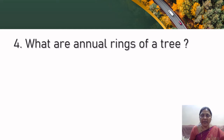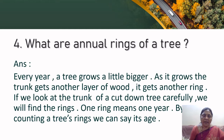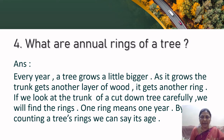Fourth question: What are the annual rings of a tree? Every year, a tree grows a little bigger. As it grows, the trunk gets another layer of wood — it gets another ring. If we look at the trunk of a cut-down tree carefully, we will find the rings. One ring means one year. By counting a tree's rings, we can tell its age.